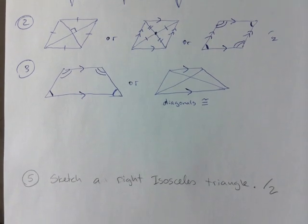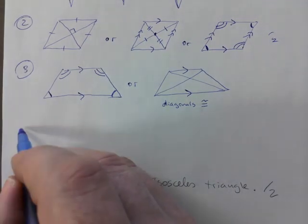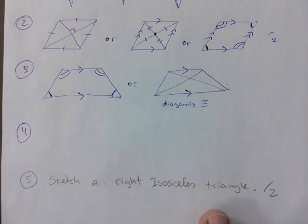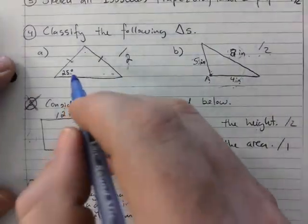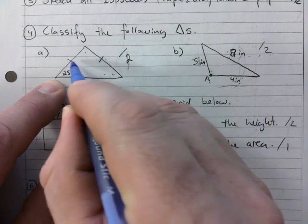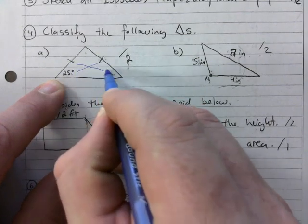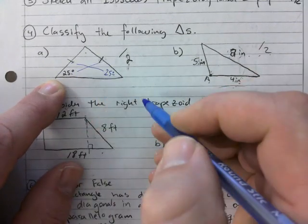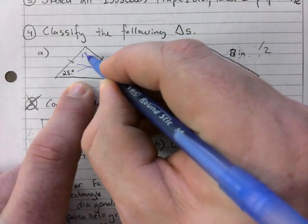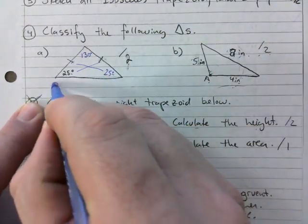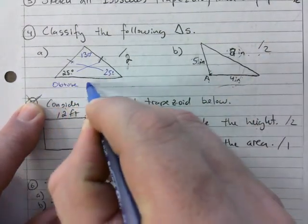You don't get bonus marks if you did three — it's fine, you're allowed to, but no bonus marks. Question four: classify the following triangle. If these two sides are the same, then so are the angles across those two sides — so this is 25° and that's 25°, that's 50°. It turns out this is 130°, so this would be an obtuse isosceles triangle.